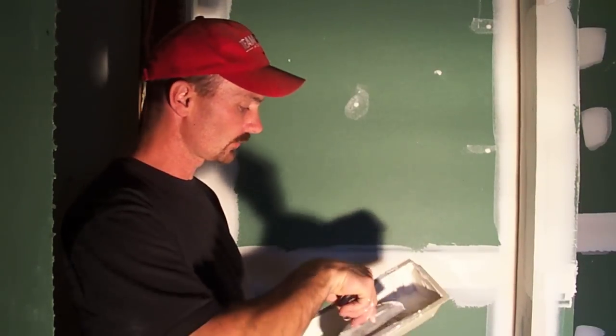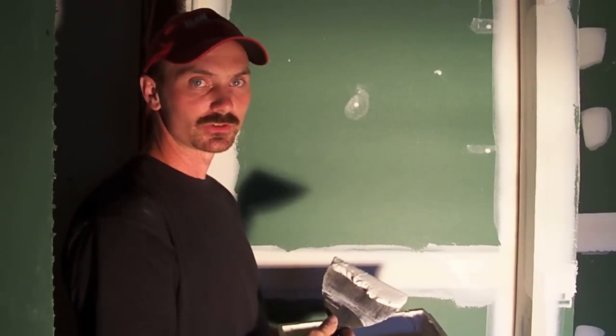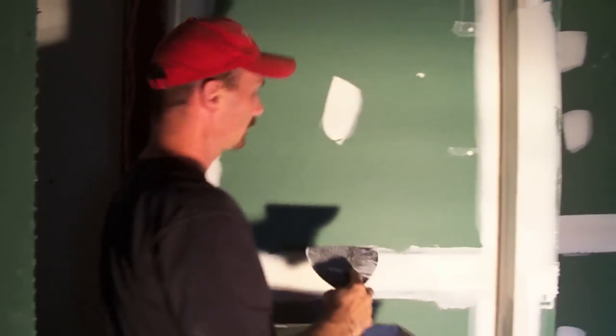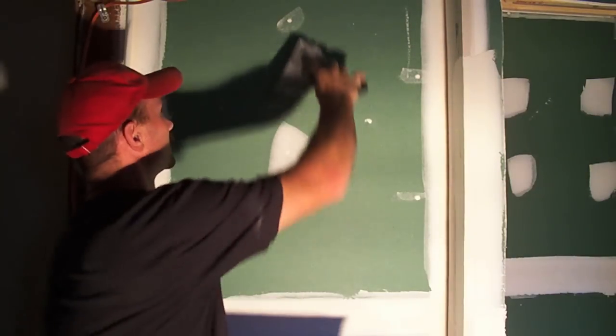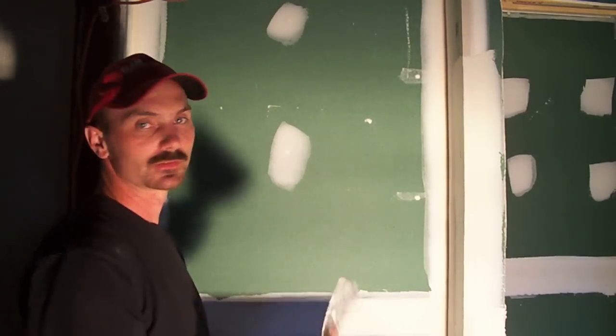Now to second coat our screws, I'm again just using my 6 inch, put a little bit on there like that, wipe the excess off on your trowel, give it a wipe. Done.